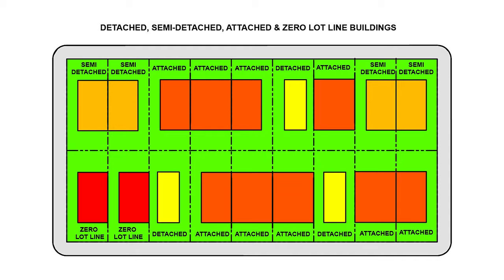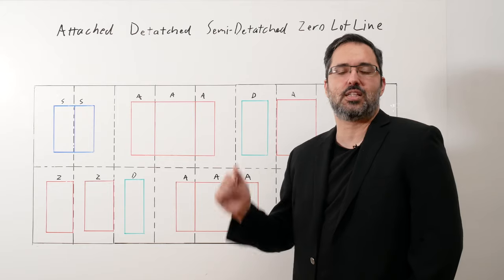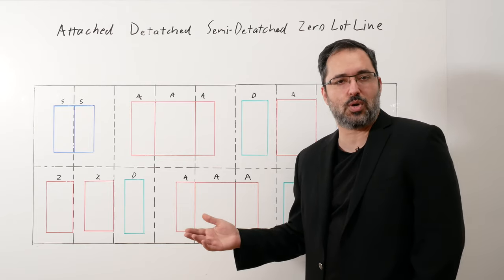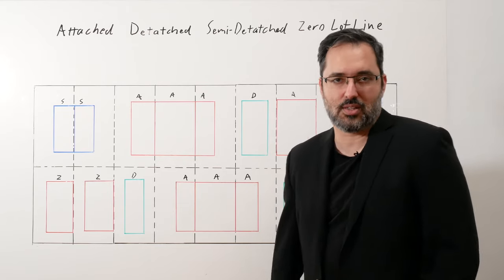That was the difference between attached, detached, semi-detached, and zero lot line buildings. Hit like, hit subscribe, leave comments below. Let me know if there are any topics you want us to discuss in the future. Thank you for listening.